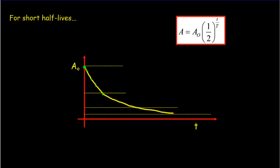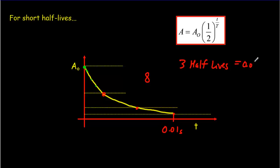For very short half-lives, you'd use a Geiger counter connected to a computer making readings very quickly — perhaps at intervals of a millionth of a second. Let your counter run for maybe a hundredth of a second. If the activity went down by a factor of eight in 0.01 seconds, that means three half-lives equal 0.01 seconds. Dividing by three gives the half-life. Essentially, you take a time from the decay curve and plug it into the expression, knowing initial and current count rates, then solve for the half-life.